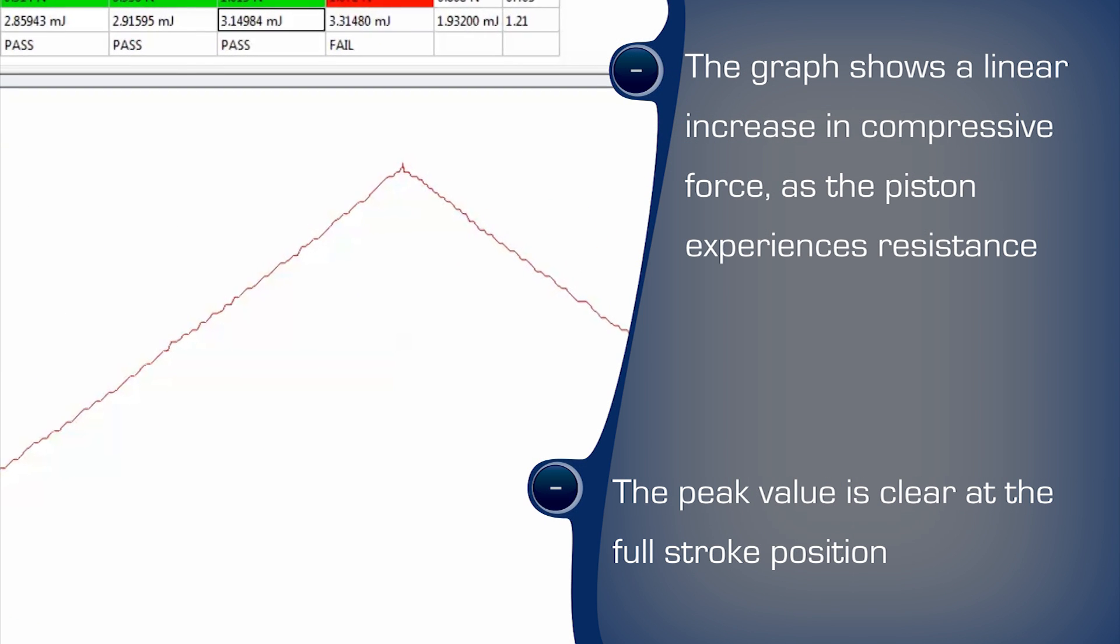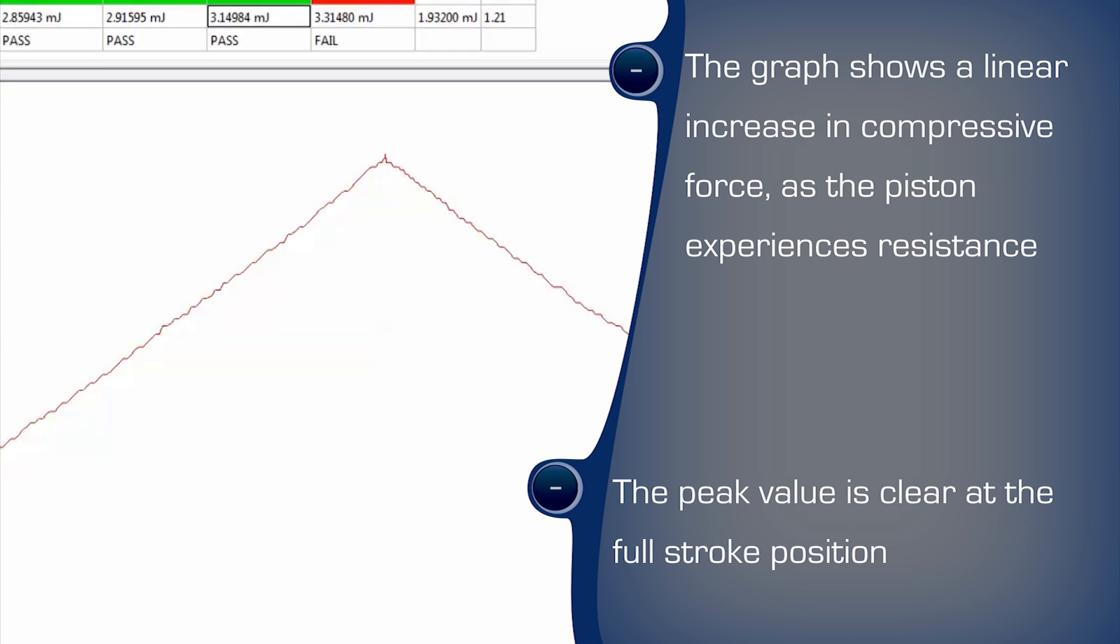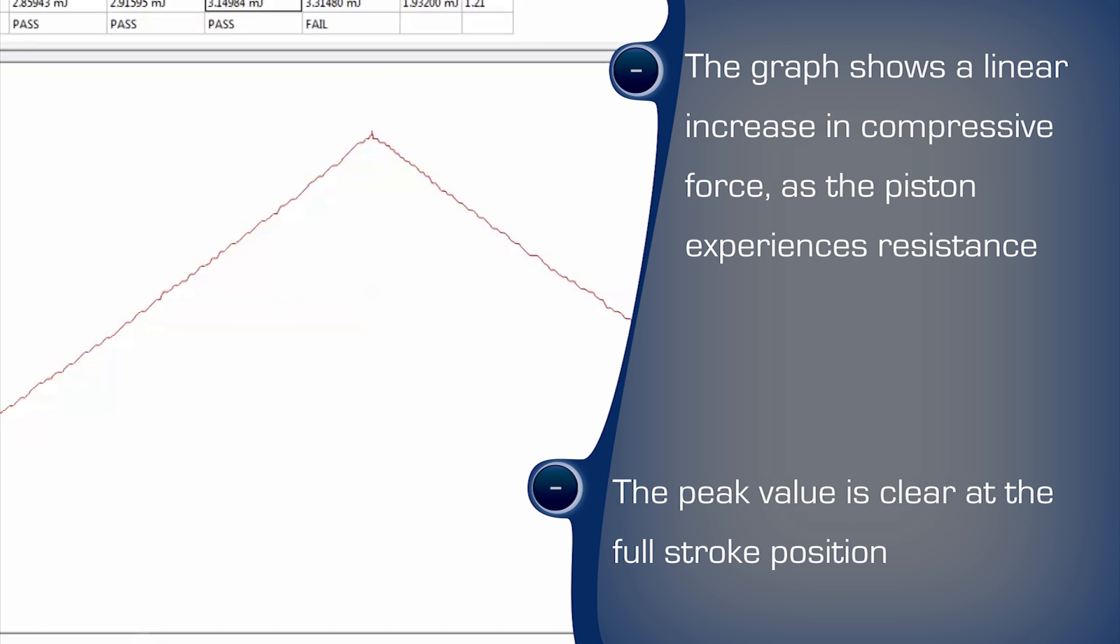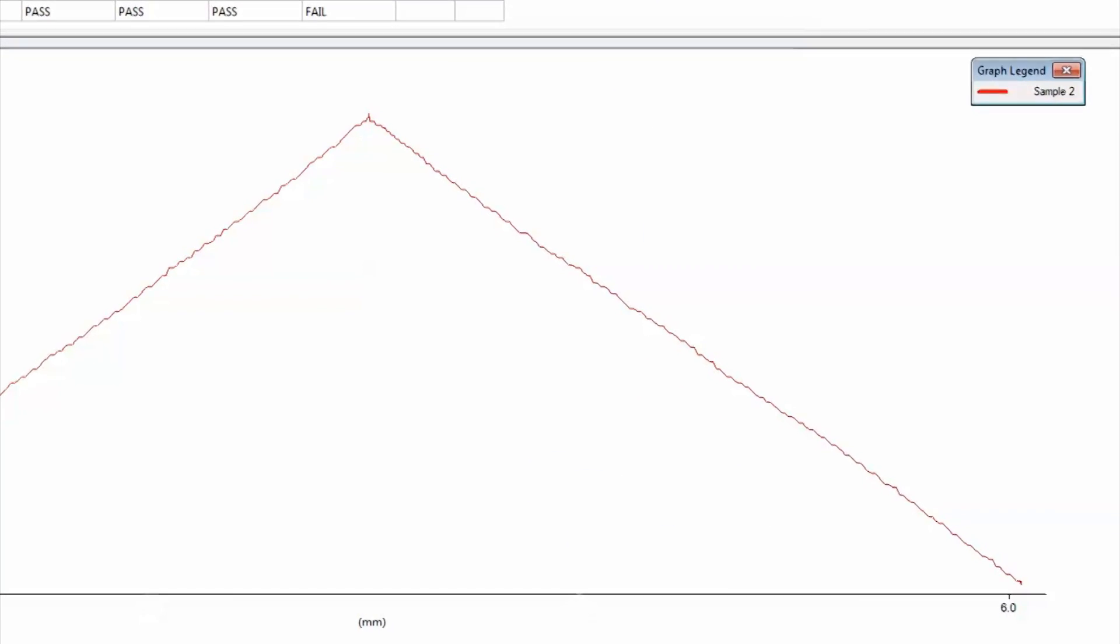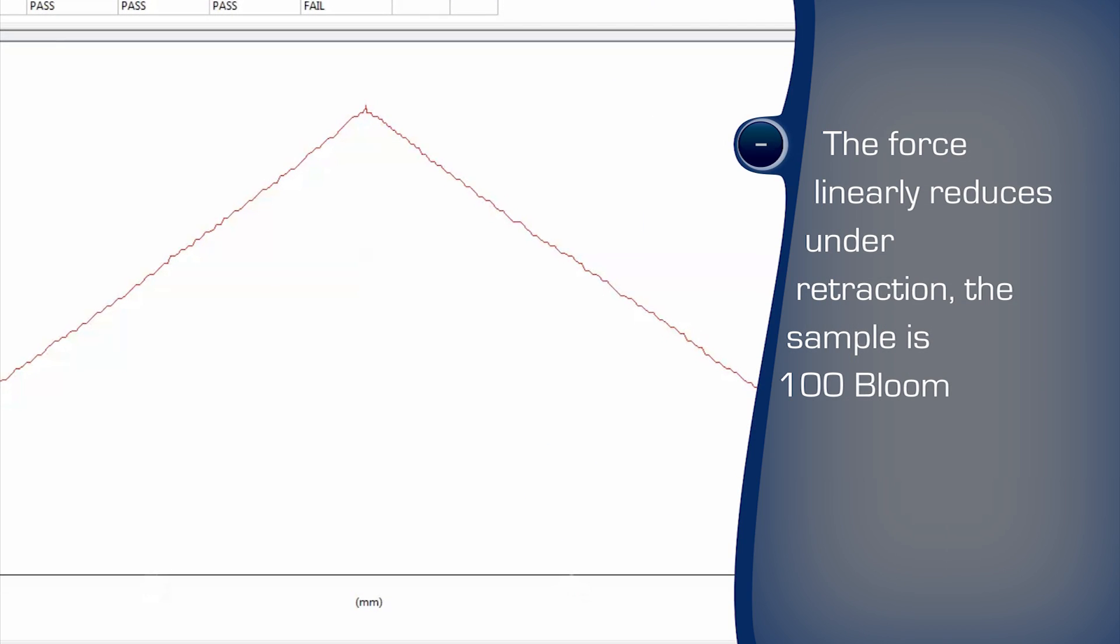The TMS software clearly displays the results, which can quickly indicate any out-of-specification samples. The peak force in grams is the recorded bloom strength.